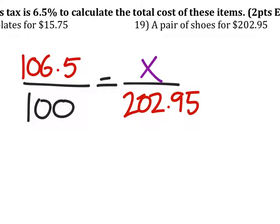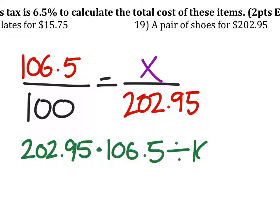So, solve this one. Process is the same. We got 202.95 times 106.5 divided by 100.